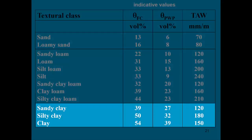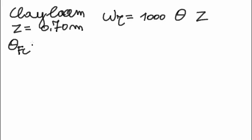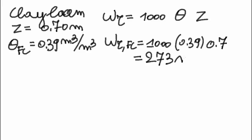Clay soils with their high field capacity but also high wilting point have some intermediate values for tau. Returning to the clay loam soil example, we are considering a root zone of 70 centimeters. The water content in the root zone is given by 1000 times theta times z. If the field capacity of the clay loam soil is 0.39 cubic meters of water per cubic meter of soil, then the water content in the root zone at field capacity is 1000 times 0.39 times 0.7, which is 273 millimeters of water.